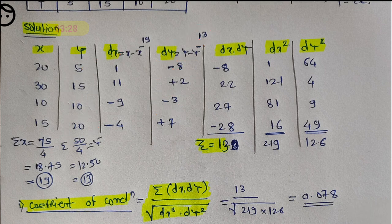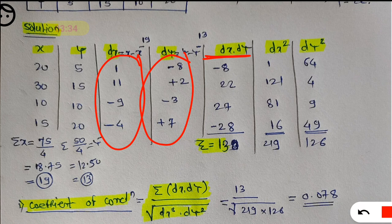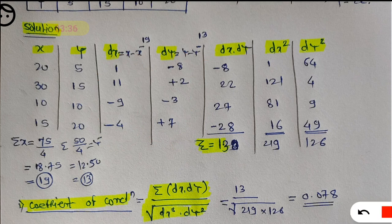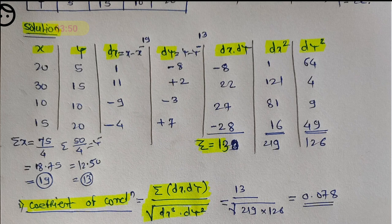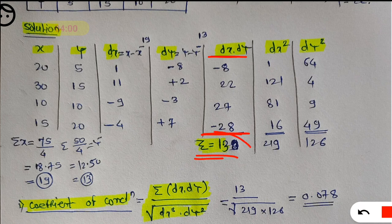After calculation of dy, you have to find dx into dy — just multiply them. So 1 into minus 8 is minus 8, 11 into 2 is 22, minus 9 into minus 3 gives plus 27, minus 4 into plus 7 gives minus 28. After doing dx into dy, you have to do the summation: minus 8 plus 22 plus 27 minus 28 gives 13. So summation of dx into dy is 13.